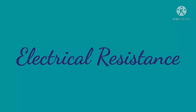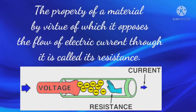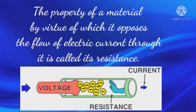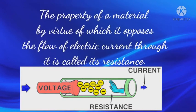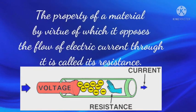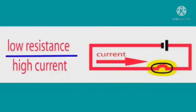All materials oppose current that flows through them. Some oppose less and some oppose more. The property of a material by virtue of which it opposes the flow of electric current through it is called its resistance. The lower the resistance, the greater is the current flowing through it, meaning less heat will be produced.